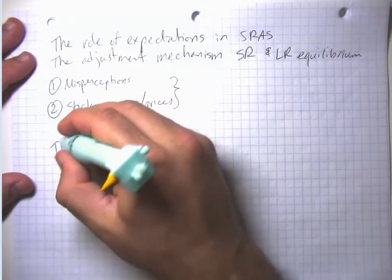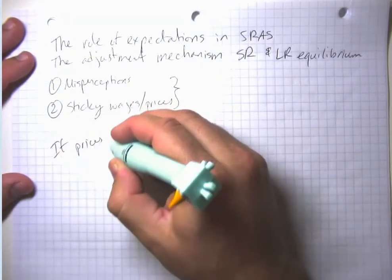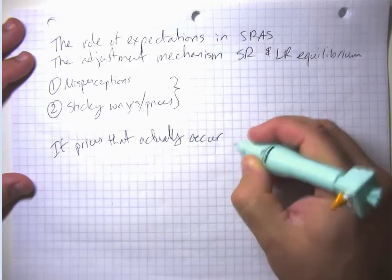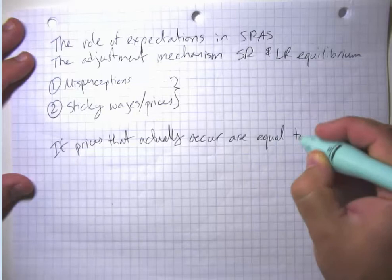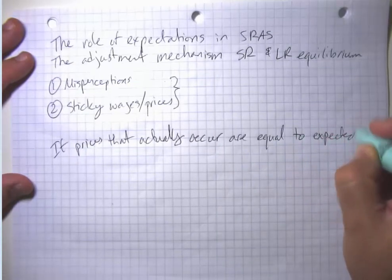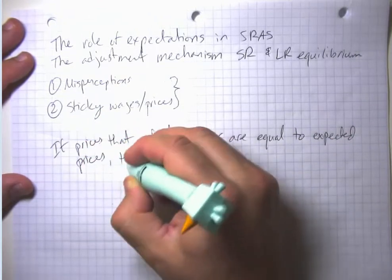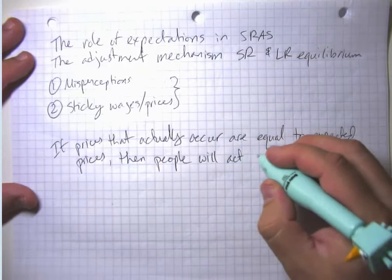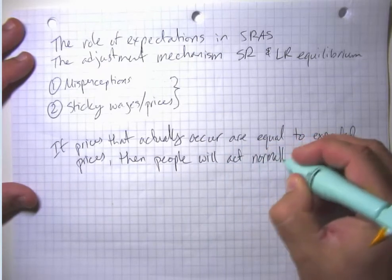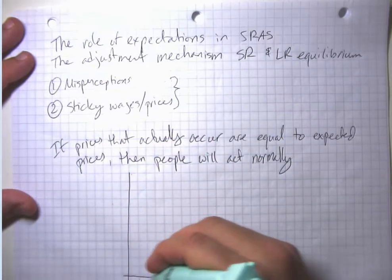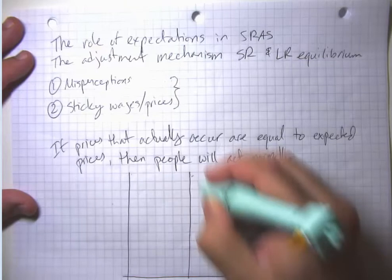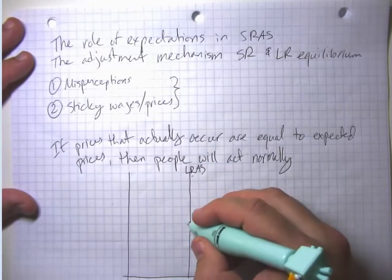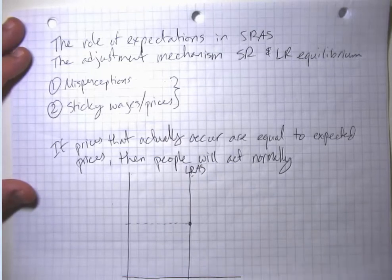In particular, if actual prices that actually occur are equal to people's expected prices, then people will act normally. People won't be surprised and won't do anything unusual. And if people are not surprised and not doing anything unusual, then they will produce right at the level of long-run aggregate supply, because that represents the normal state of the world when we have neither a recession nor a boom.